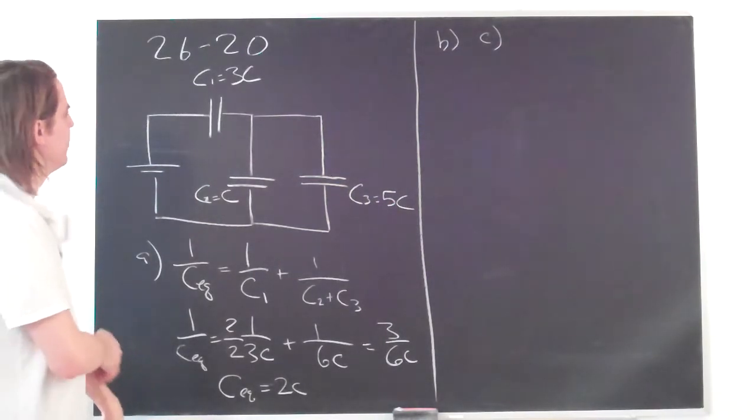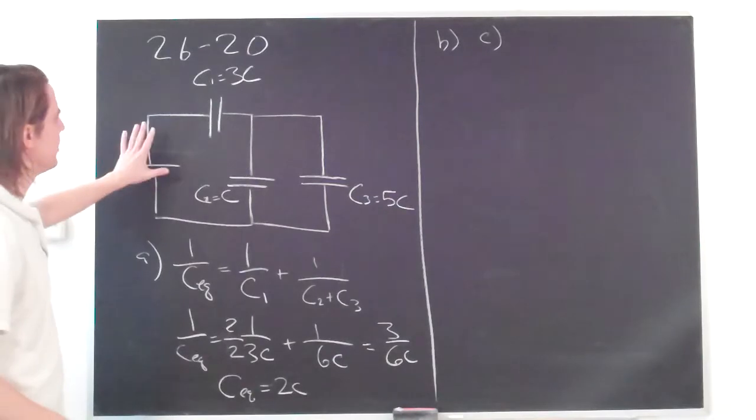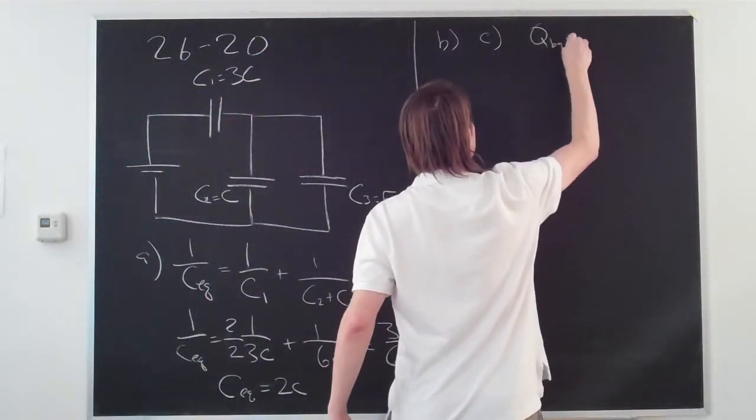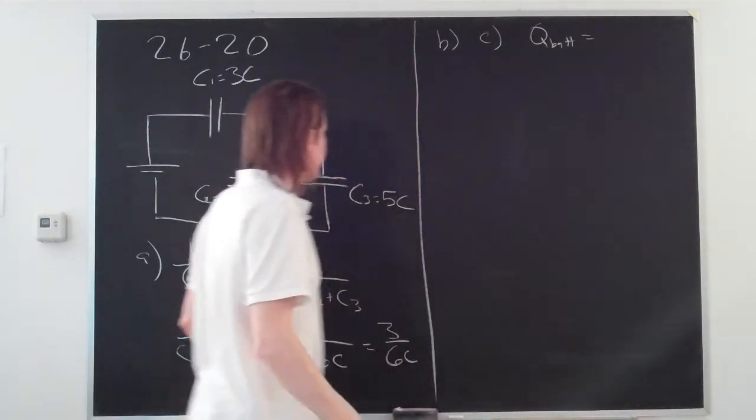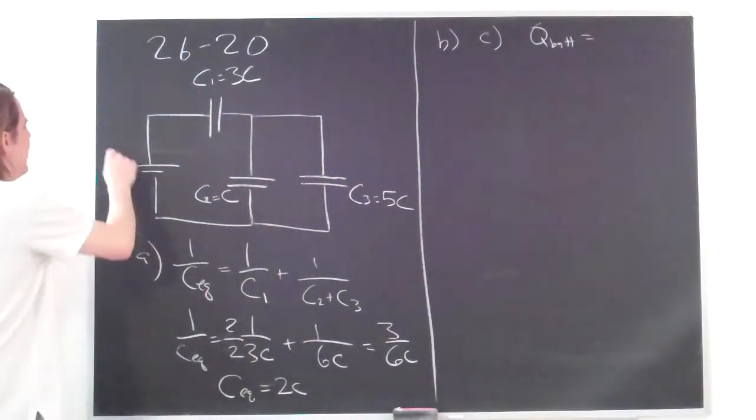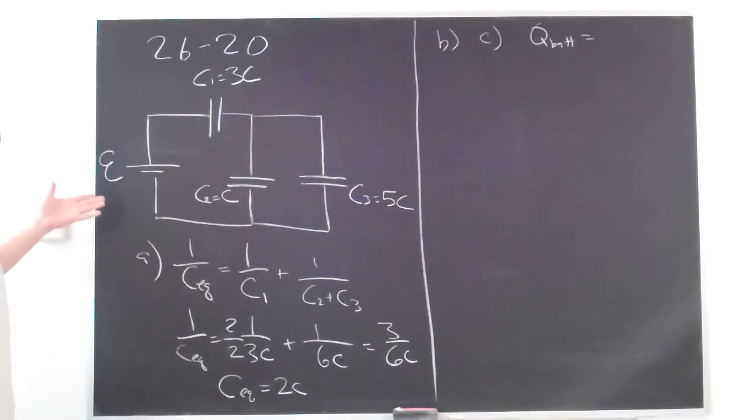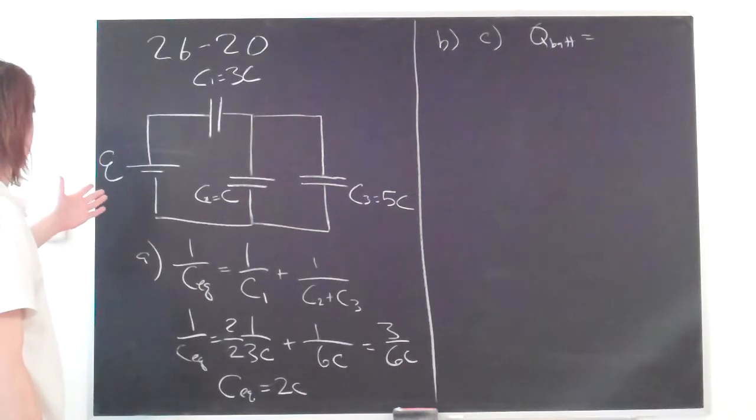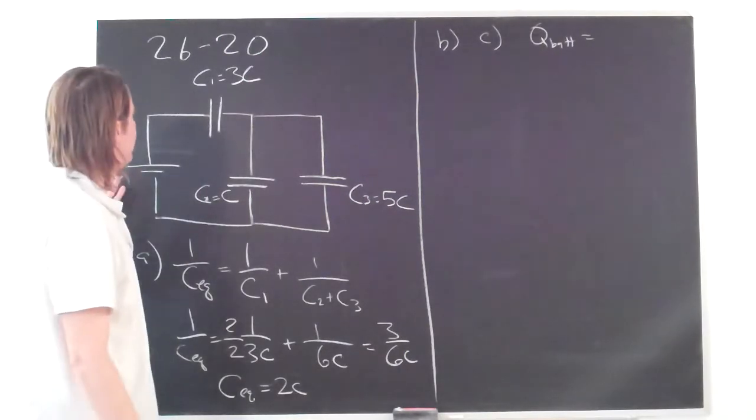So the first thing you would always ask yourself is, what is the total charge that's going to come out of the battery? So I usually call that QBAT. And to do it this way mathematically, we have to give, we have to assume an EMF. So we don't need it numerically. This isn't really a numerical problem. But we can assume the battery puts out some EMF, which we'll just call E.